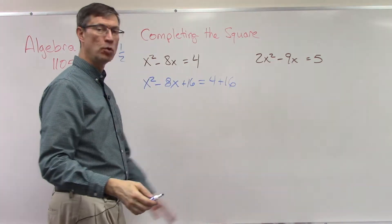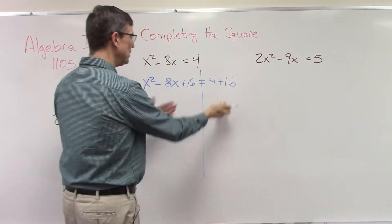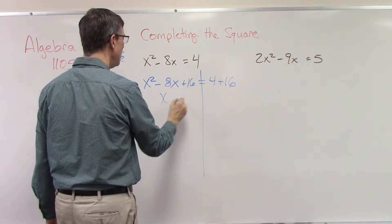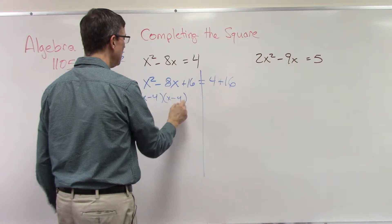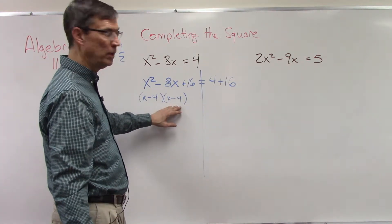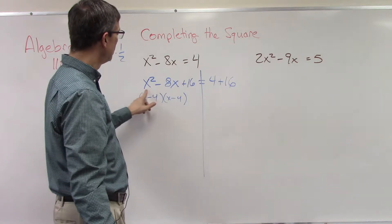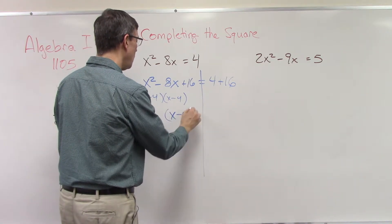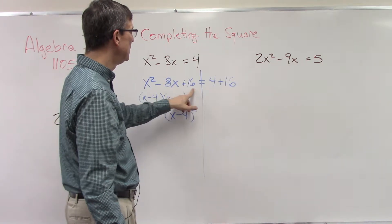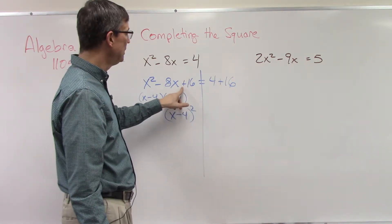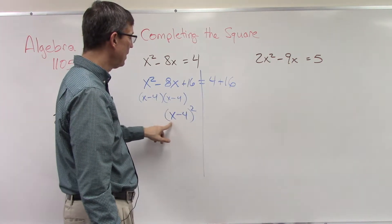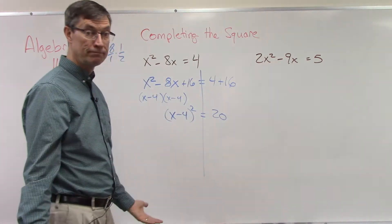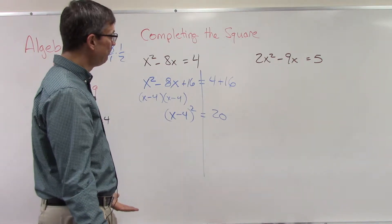We add 16 to both sides of the equation to keep it balanced. The reason we do that is because the left side then becomes a quantity squared. Do you see how this is the same as x minus 4 times x minus 4? If I used the FOIL method I would get it back again. So I can write this as (x minus 4) quantity squared — I've completed the square by adding the 16. Now I have a quantity squared equals, and simplifying the right side gives me 20.